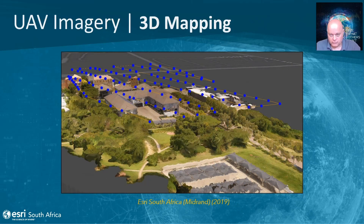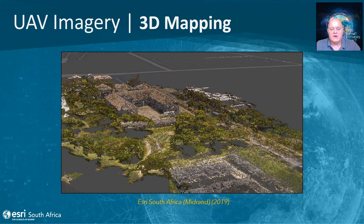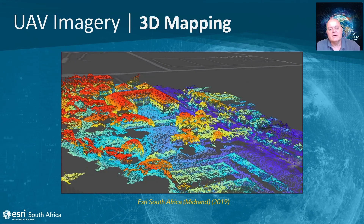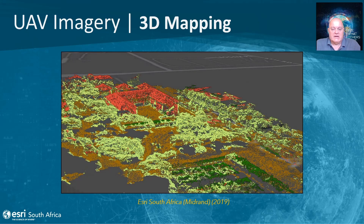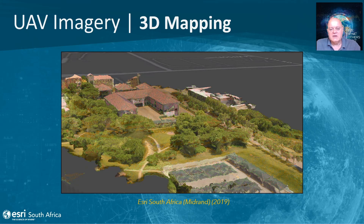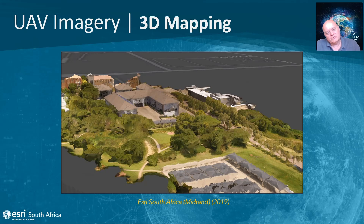Next, I'd like to talk about drone or UAV surveys. Here you can see an image of our building in Midrand and the flight path flown by the drone. The 3D products we can derive include a point cloud — colorized by the image itself, classified by height above ground or sea level, or classified into buildings versus vegetation such as trees versus grass. Finally, a textured mesh provides a photorealistic image of the building that can be loaded into a scene and viewed from different angles.